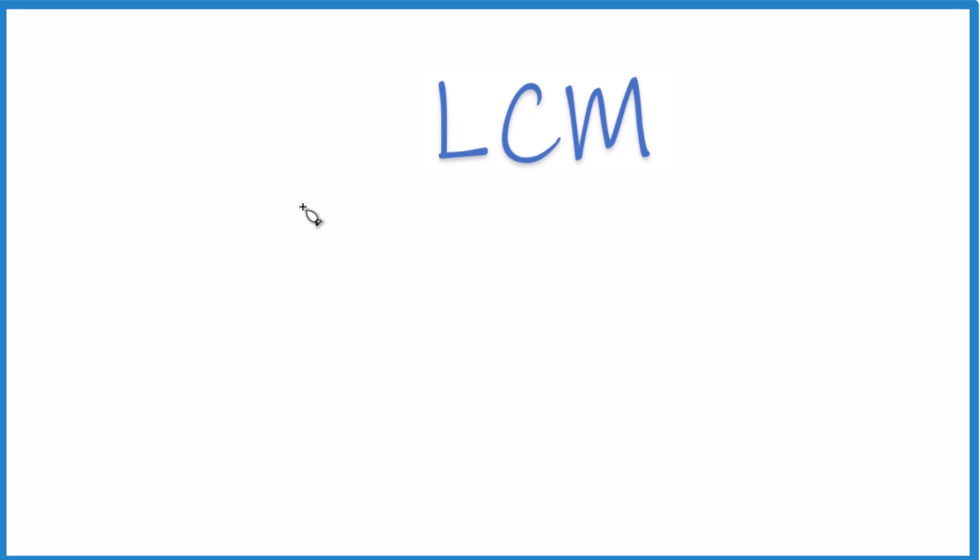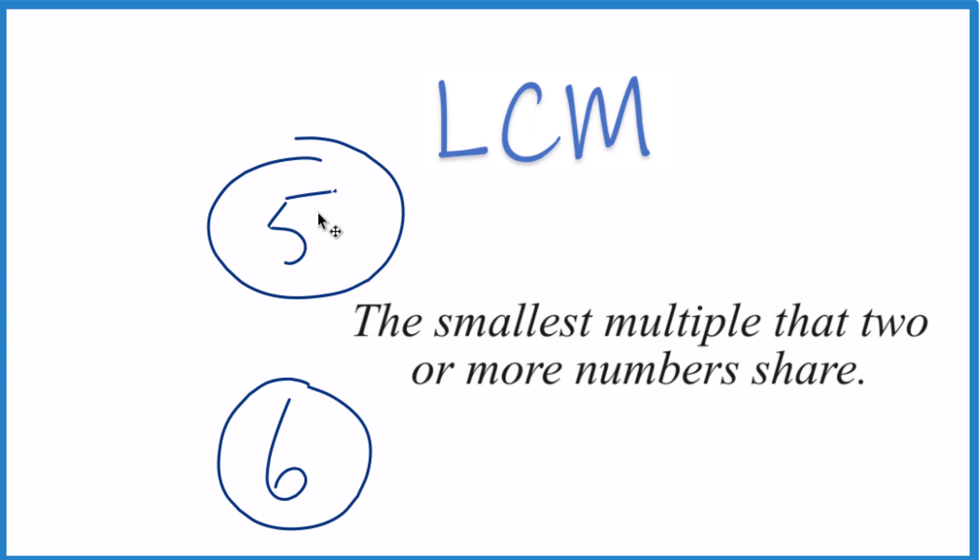So let's find the least common multiple, the LCM, for 5 and 6. And so when I think about the LCM, least common multiple, I'm thinking about the smallest multiples that these two numbers here, 5 and 6, share.